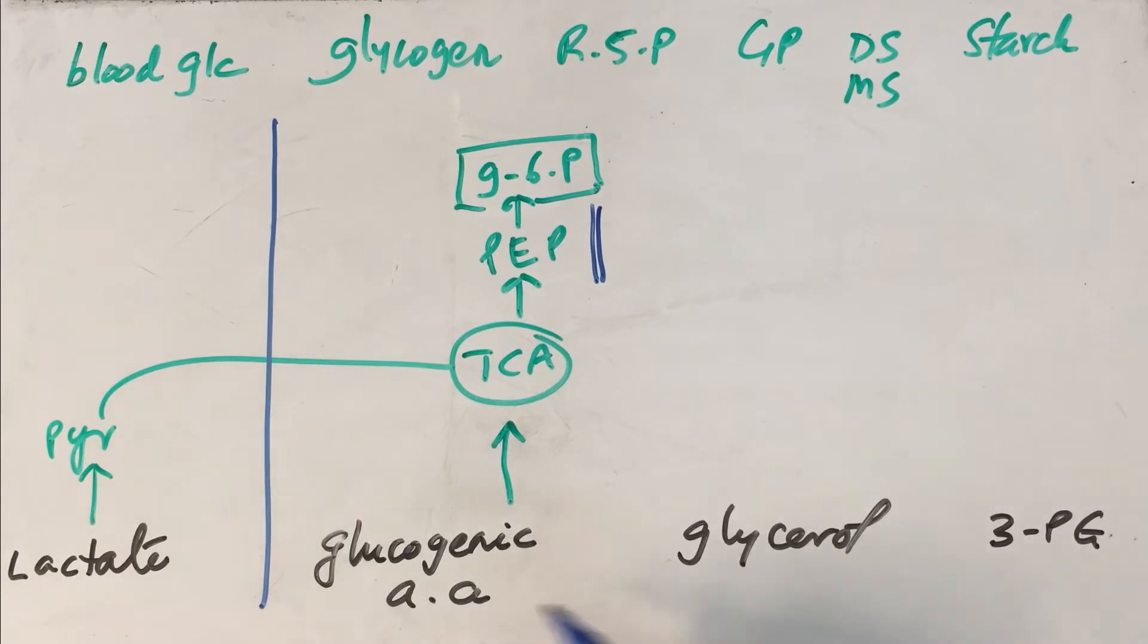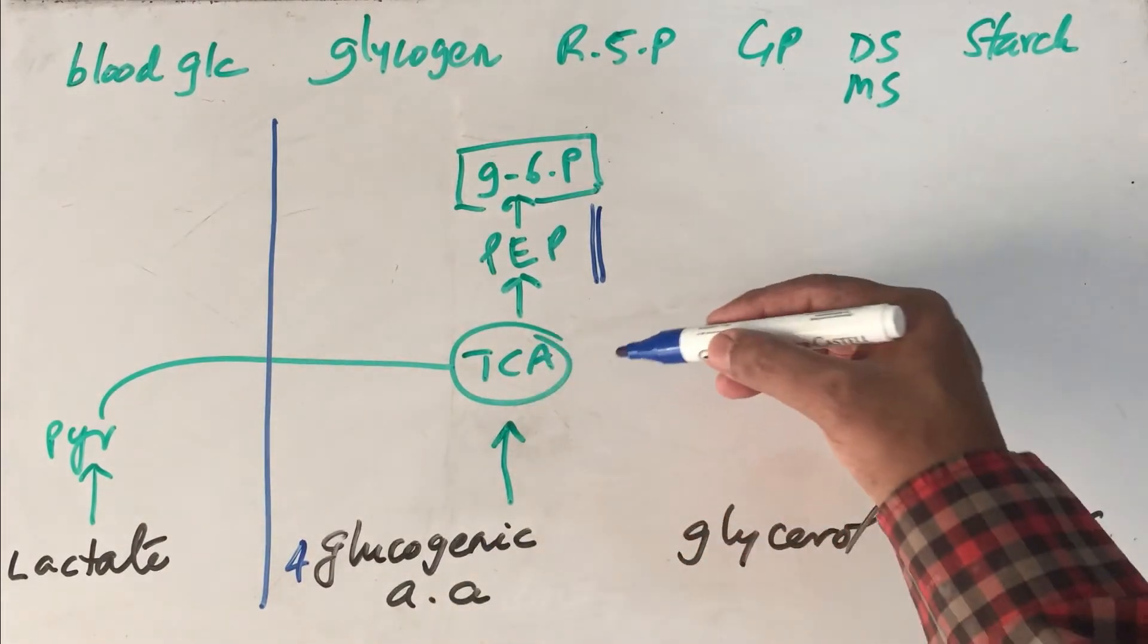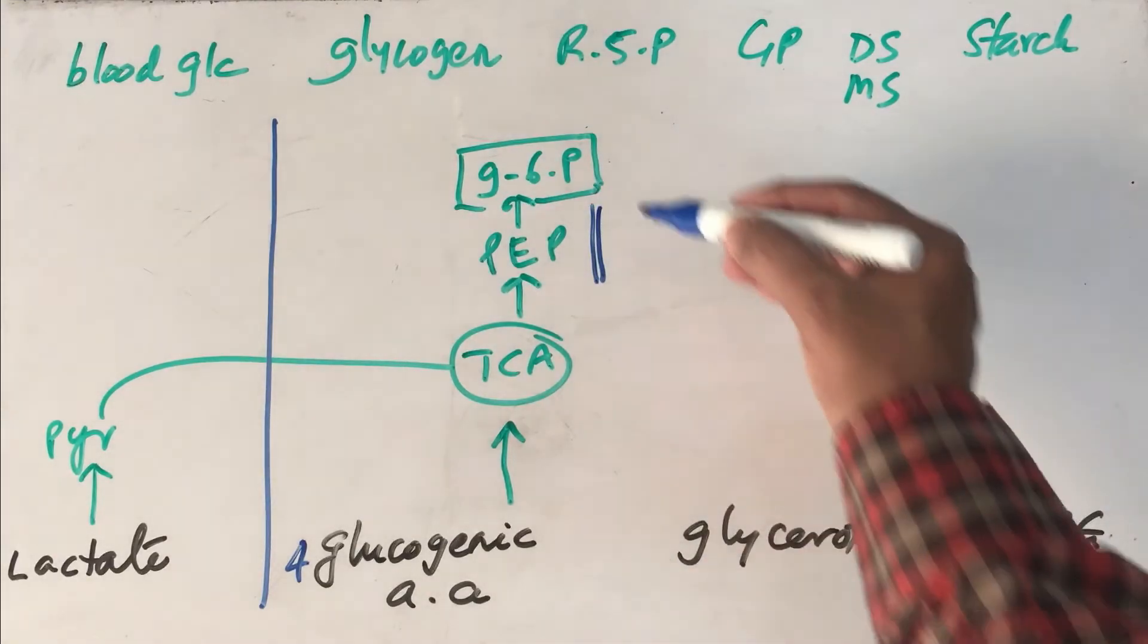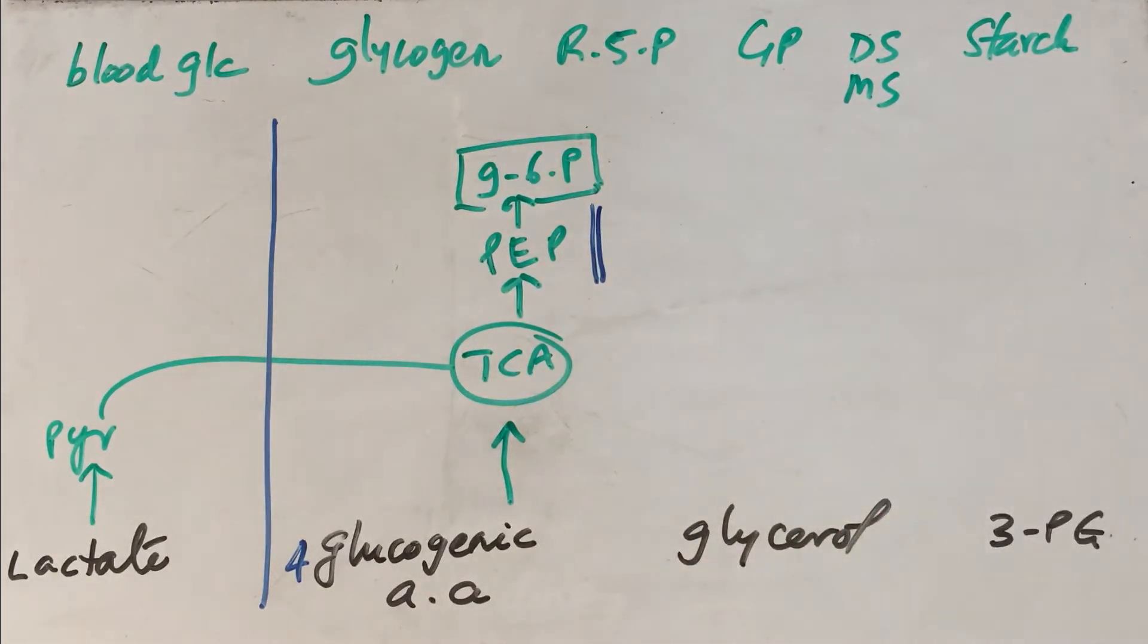Another possibility is there are several gluconeogenic or glucogenic amino acids. There are about four such glucogenic amino acids, very purely glucogenic amino acids. They also become part of the TCA cycle, get converted into phosphoenol pyruvate and then finally into glucose 6-phosphate.